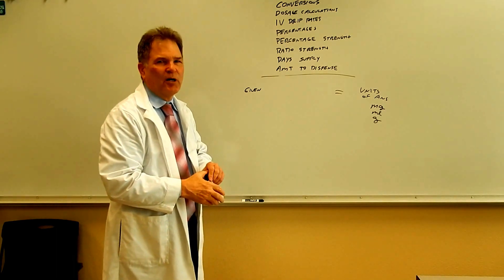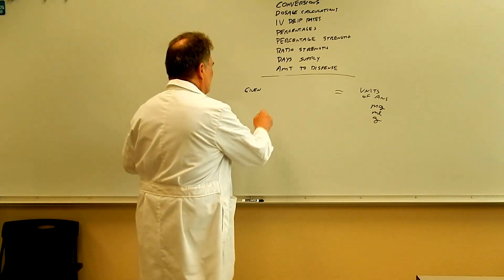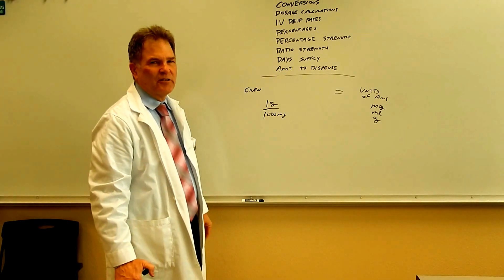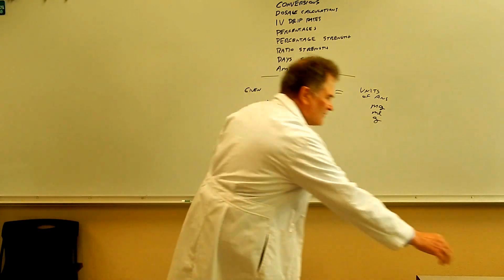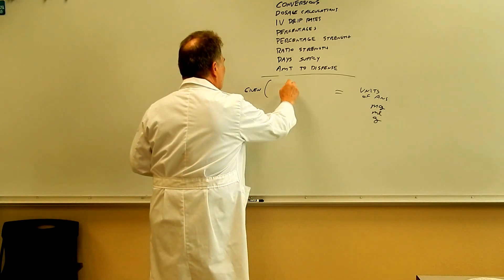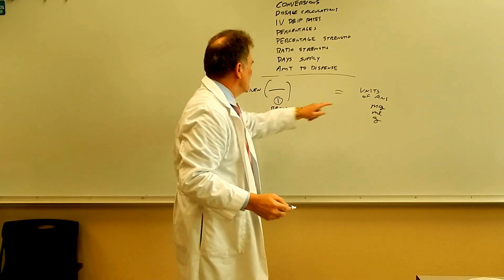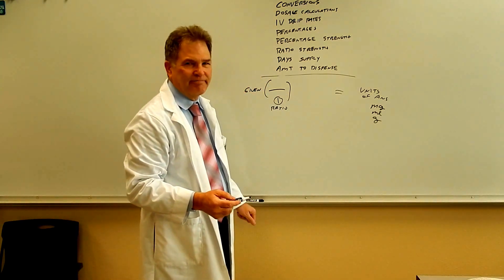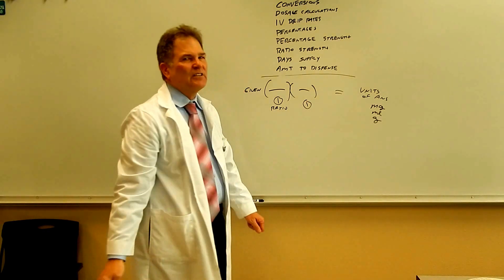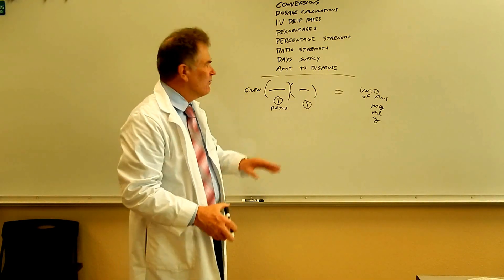The third thing that all of these problems have in common is they all have at least one ratio. When we talk about a ratio, we mean one gram per thousand milligrams — that's a ratio. Since all the ratios equal one, we're going to multiply the given by a ratio which equals one, and we're going to change the units of the given into the units of the answer. That's all we're doing — we're multiplying by one. Sometimes we have to put in more than one ratio, but they always equal one, so we're never changing the actual value or the amount of the drug.